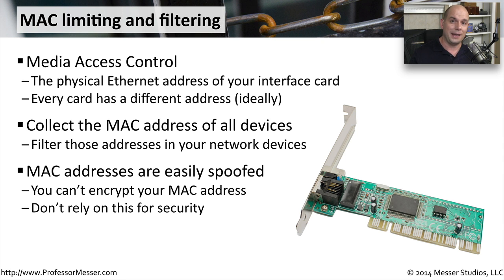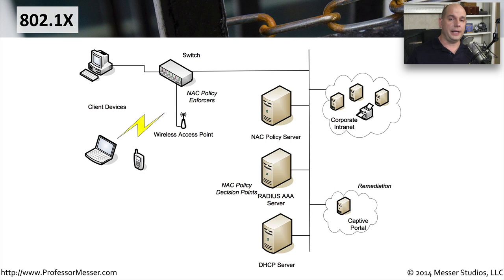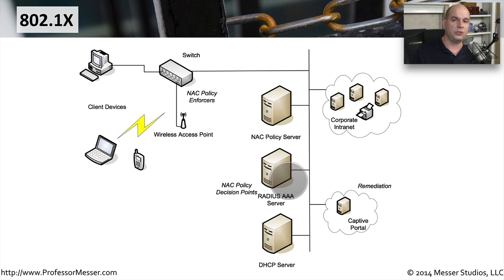And now you have the same access that all computers have inside the network. Many organizations associate network access with authentication that you must provide. This uses 802.1x, where your machine must first authenticate to a central authentication server. Only after that authentication has happened do you gain access to the network. If anybody from the outside simply plugs in, they won't have any access until they provide the correct username and password.